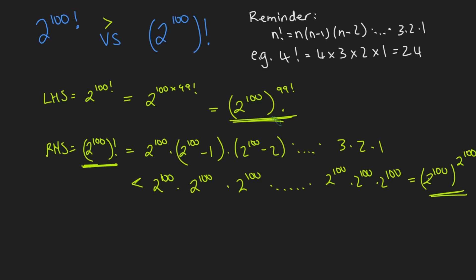And if we have a look at them, they both have the same base, 2 to the 100. So in order to show this is bigger than this, I just need to show that 99 factorial is bigger than 2 to the 100.